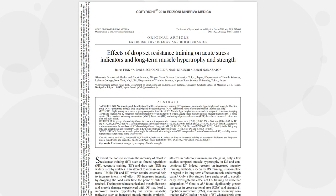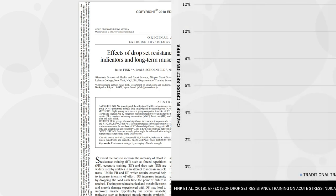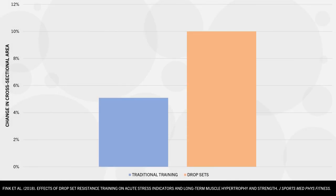Another example is this study, which explored the effects of drop sets, where multiple sets were performed in succession with no rest, versus traditional training with 90 seconds rest between sets during tricep extensions. Like the previous study, the drop set training resulted in greater triceps hypertrophy compared with the traditional training group. While neither of these studies completely isolated rest periods alone, we do see a trend that shorter rest periods may be similarly or even more hypertrophic compared with longer rest periods for isolation lifts.